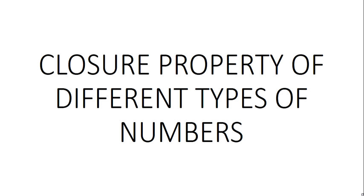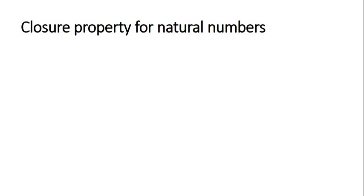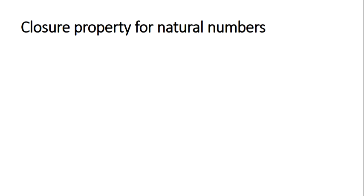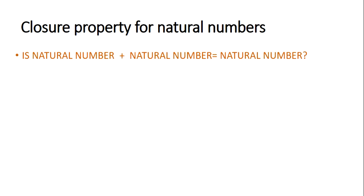Hello students, today I am going to explain closure property of different types of numbers. Let us first discuss closure property of natural numbers. As you all know, natural numbers are counting numbers — they start from 1, 2, 3, 4, 5, 6 and go up till infinity. Closure property says that if two natural numbers are involved in any kind of operation, the answer must also be a natural number.